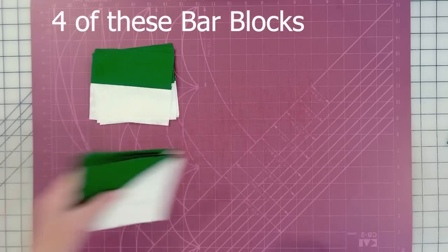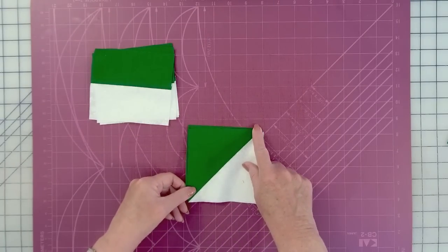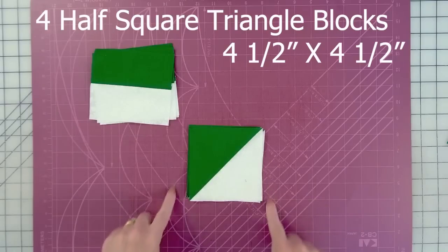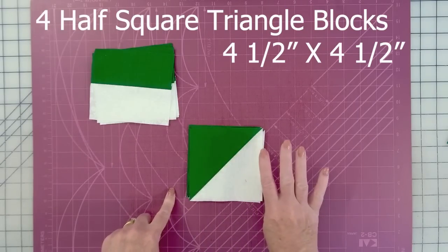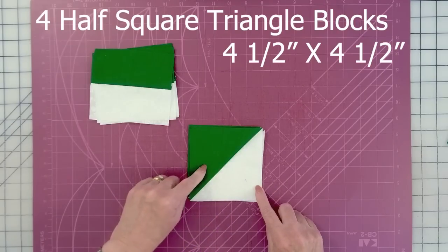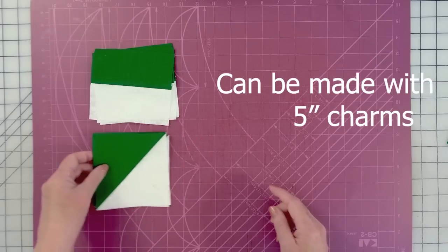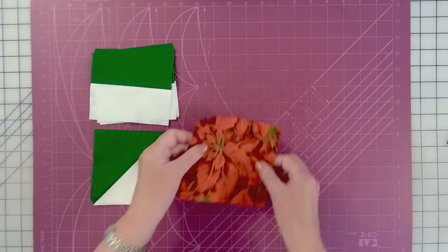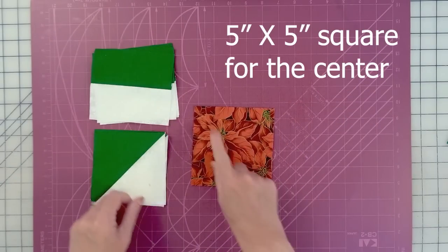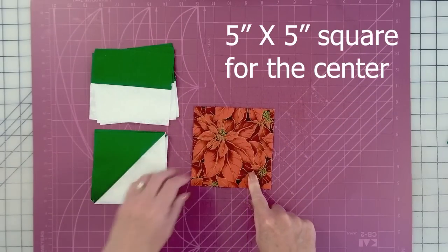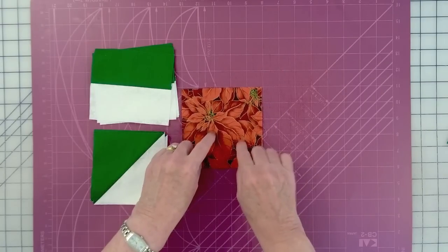The next thing we need is half square triangles. These are going to be four and a half by four and a half, and we need four of them. These can also be made with five inch charms. I show how to do that on my first video. I'll have a link down below. And then the last piece is a five inch by five inch square. This is going to be the center of the block.